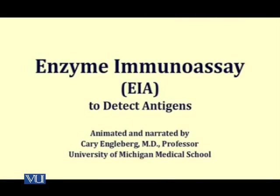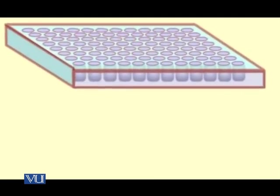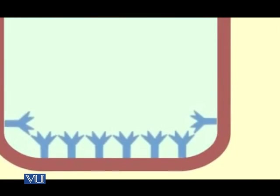Many simple rapid diagnostic tests detect specific antigens in biological samples by using an enzyme immunoassay. This animation explains how a prototype example of this assay works. The enzyme immunoassay can be performed in a multi-well microtiter plate or on any other solid-adherent surface. In this example we will use the microtiter plate, and take a closer look at one well to see what happens during the assay.